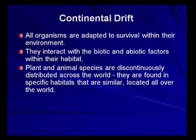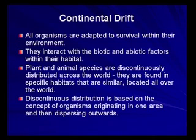If there's a climatic region in South Africa that is similar to a climatic region in Europe - say Italy, Spain, Portugal, or Germany - with the same type of climate, we will find the same organisms there. So it is discontinuously spaced depending on the climate and the organisms found there. This continuous distribution is based on the concept of organisms originating in one area and then dispersing outwards, depending on the climate being the same as where they originated.